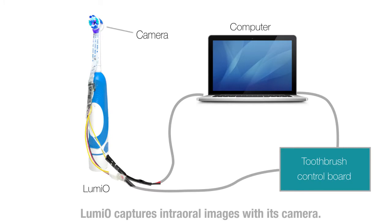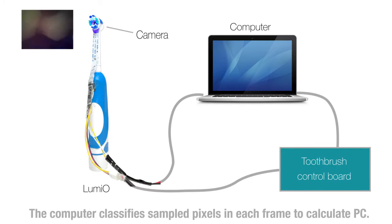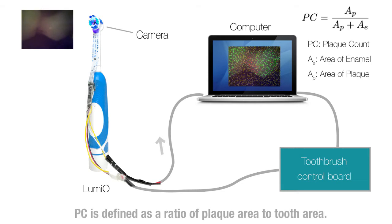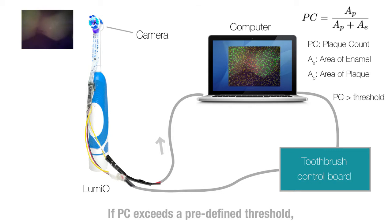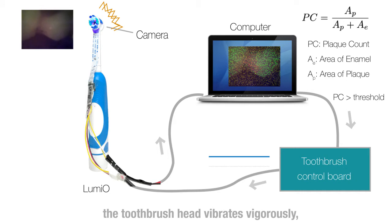Lumio captures intra-oral images with its camera. The computer classifies sample pixels in each frame to calculate a measure we call PC, which is defined as a ratio of plaque area to tooth area. If PC exceeds a predefined threshold, the toothbrush head vibrates vigorously to indicate an area that should be brushed intensely.